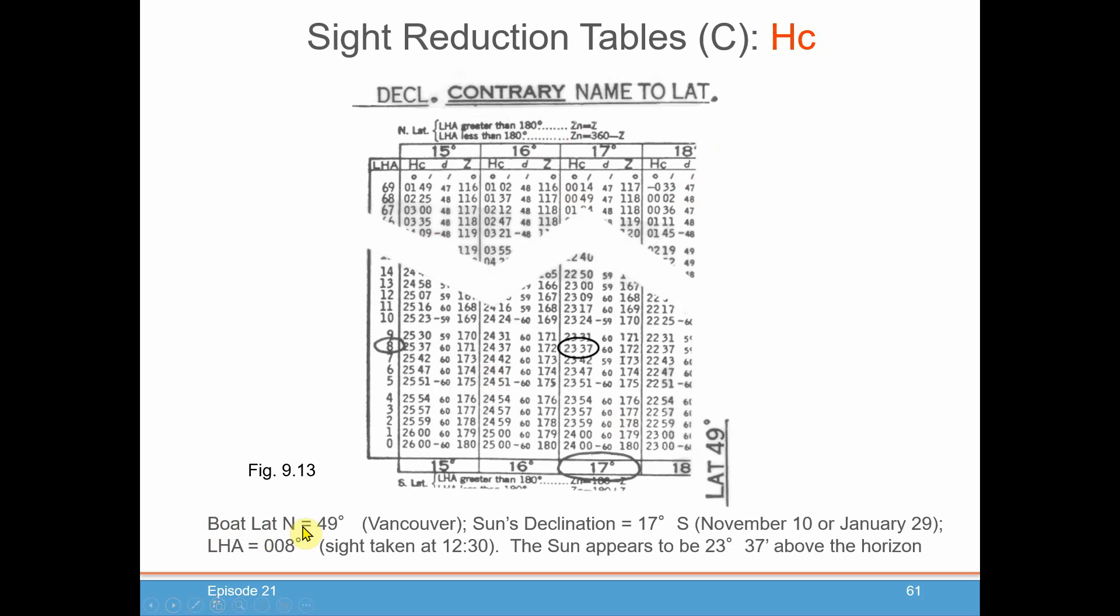Here, your boat is latitude north, 49 degrees, somewhere near Vancouver, British Columbia, Canada. The declination of the sun happens to be 17 degrees south. So the first thing you notice is that the sun is in south, the boat's in north, so you are on contrary names. You go to that section of the tables for latitude 49 degrees. The declination of the sun being 17 degrees south is probably around November 10th or January 29th. You also determine that your LHA is 8 degrees. So you're just a little bit past noon, most likely.